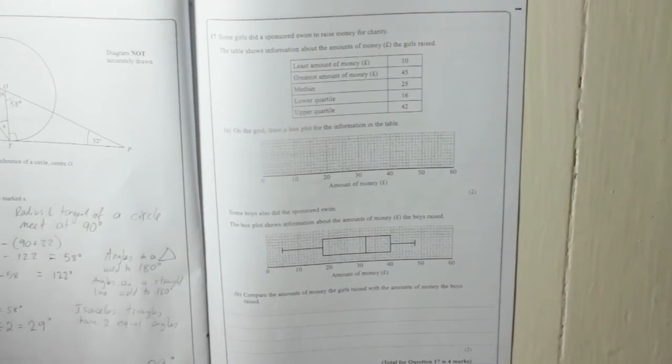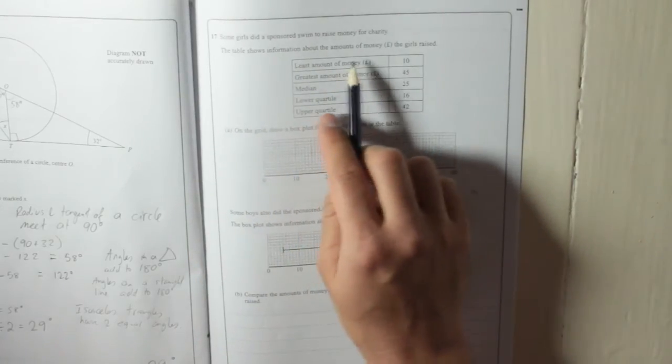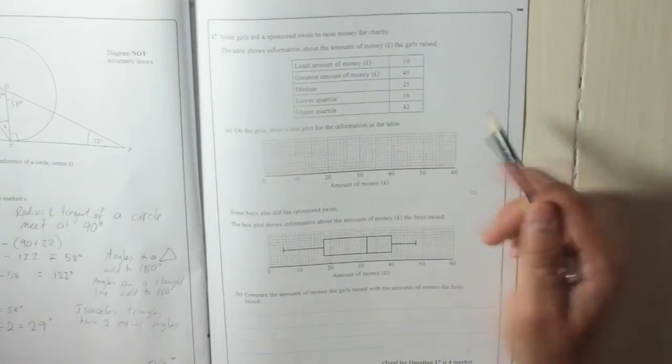Question 17. Some girls did a sponsored swim to raise money for charity. The table shows information about the amounts of money in pounds that girls raised.